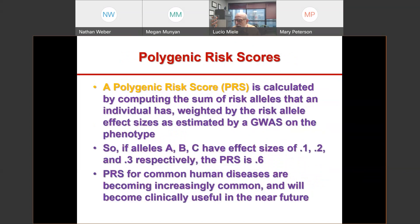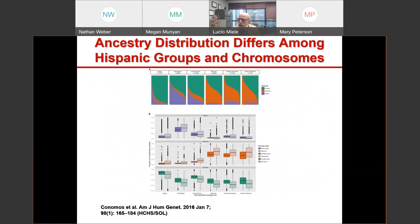A polygenic risk score is calculated by adding up the contribution of individual variants to the risk of disease. Let me show you some real examples from the literature.